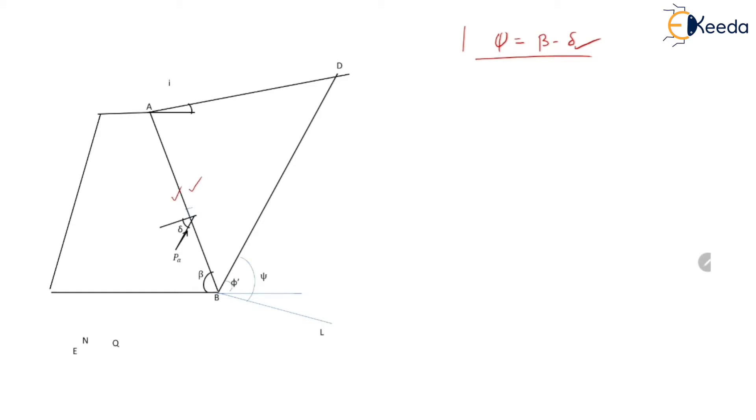Now the next step is to assume a trial failure surface. Suppose BF is the assumed trial failure surface. Then weight of the wedge BAF is calculated. And this weight is plotted on line BD. Let us establish an intermediate point P such that BP is equal to weight of the wedge BAF.